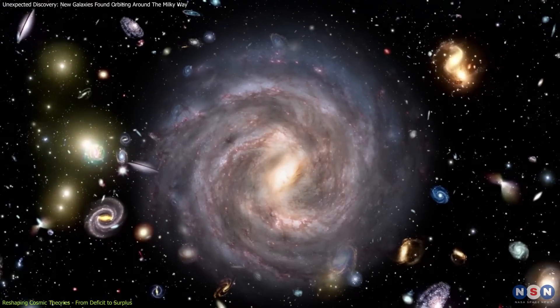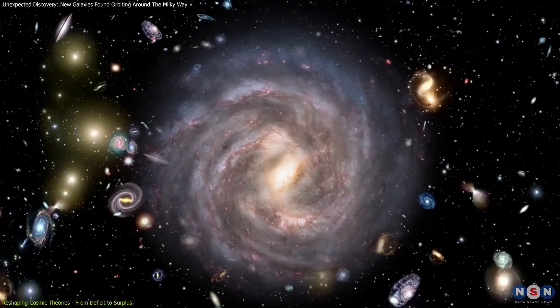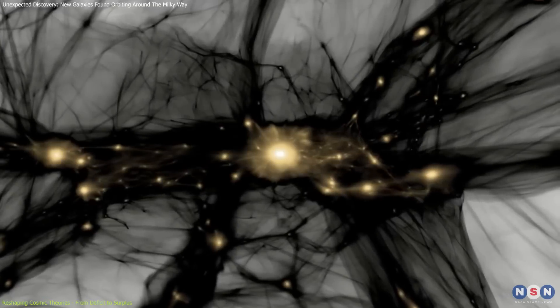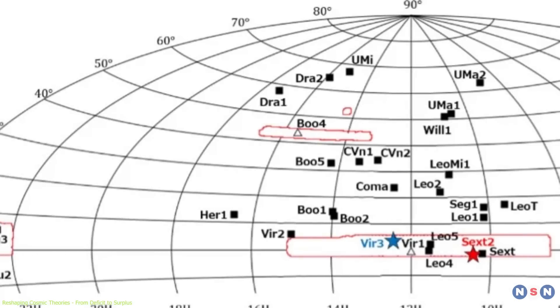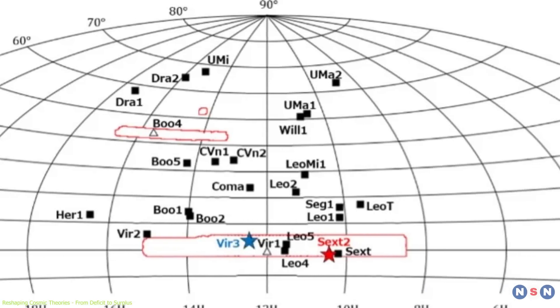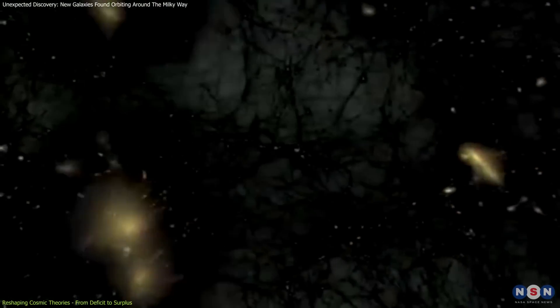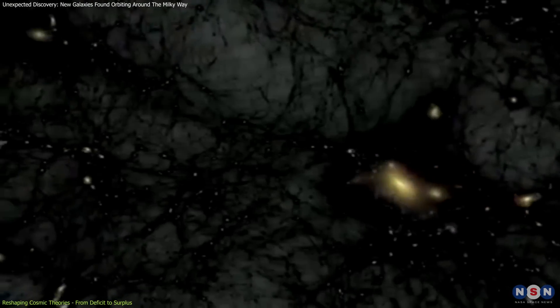This influx of satellites has profound implications for dark matter research, which plays a crucial role in galaxy formation and stabilization. The unexpected number of satellite galaxies suggests that adjustments may be necessary in our understanding of how dark matter influences galactic structures.